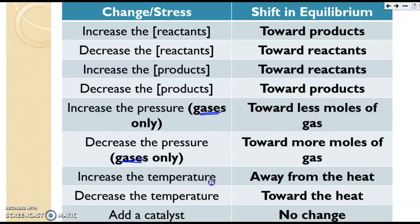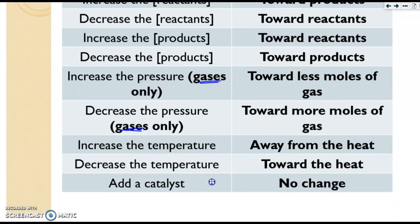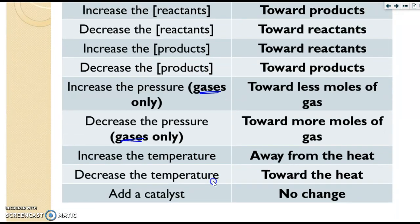If you increase the temperature, you move away from the heat in the reaction. And if you decrease the temperature, you go toward it. I always say, if it's hot outside, I don't want to be near the fire. But if it's cold, I do. That helps me remember that. And then finally, if a catalyst is added, there is no change in equilibrium. You'll get a chance to try this on the next slide.